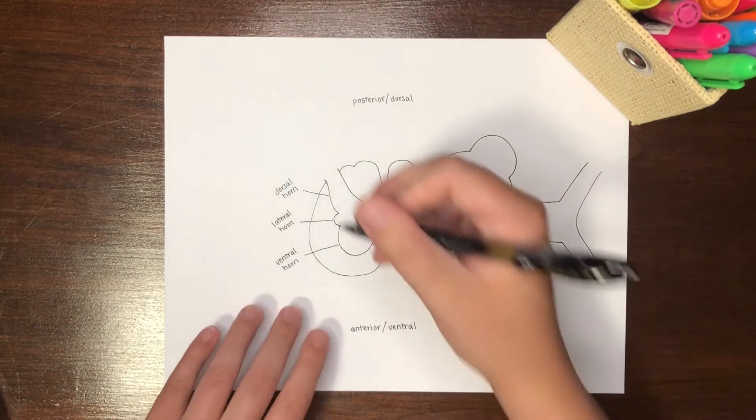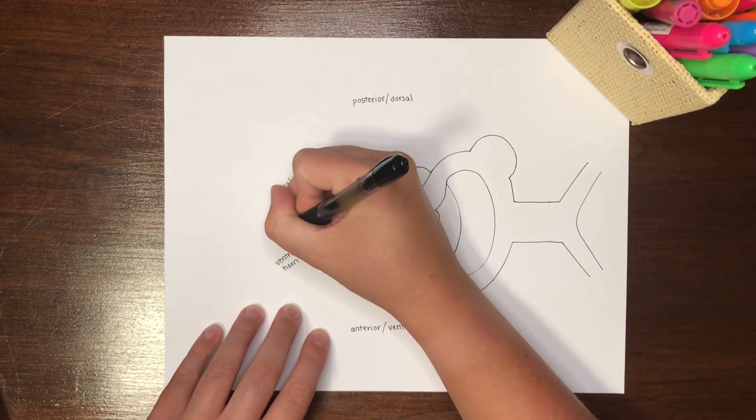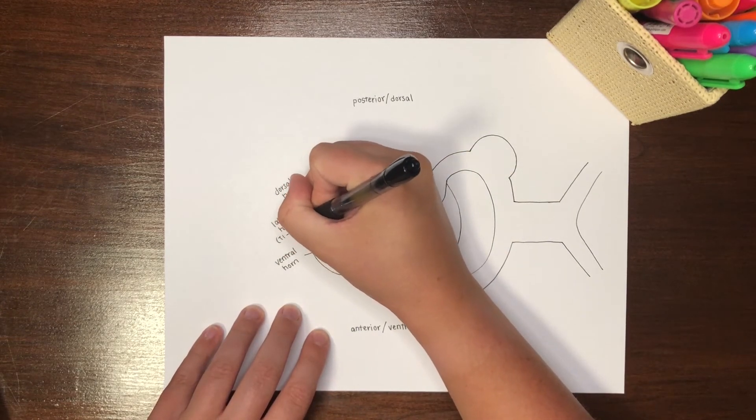It is also important to note that the lateral horn is typically only present from spinal levels T1 through L2.